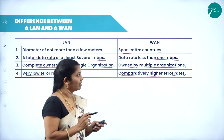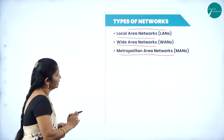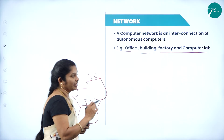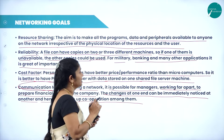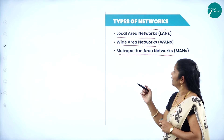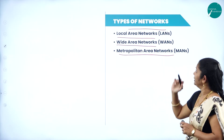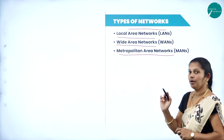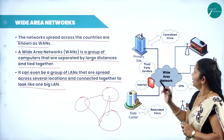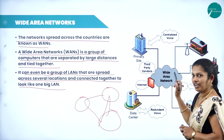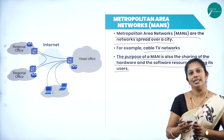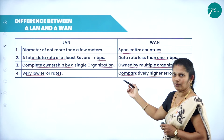On today's class, you have come to know what networking means — it is an interconnection of autonomous computers. You have learned the networking goals, the need for networking, and the different types of network: Local Area Network, Wide Area Network, and Metropolitan Area Network. LAN covers a small geographical area, WAN covers a wide area, and MAN is in between LAN and WAN. You also learned the difference between LAN and WAN.